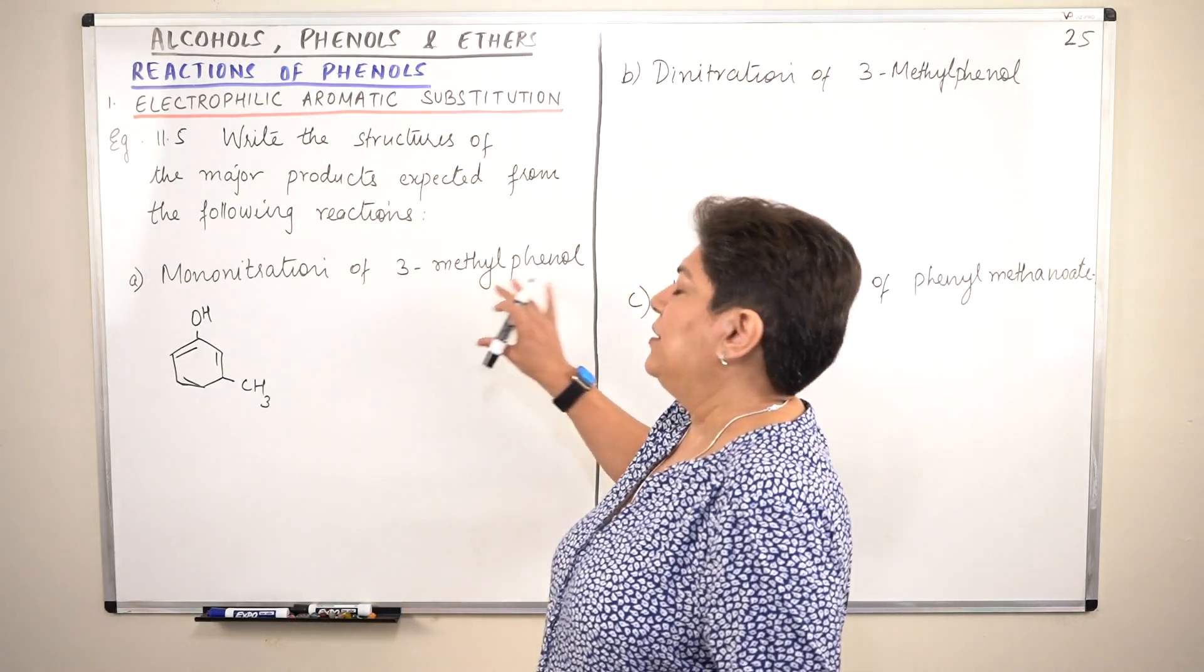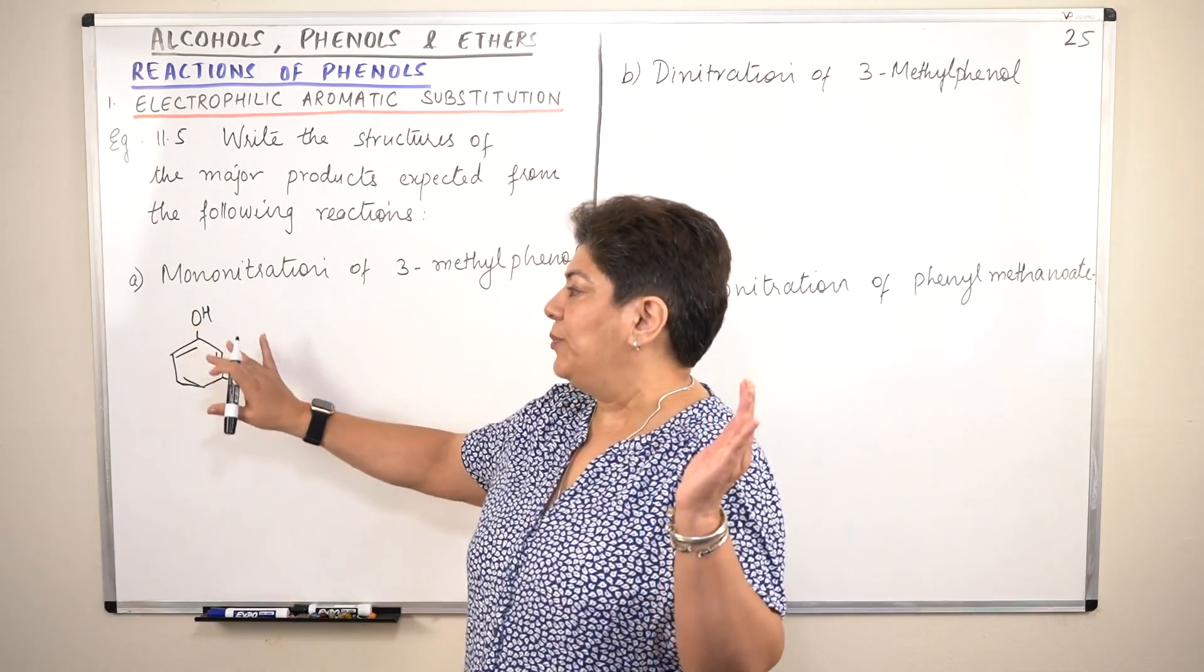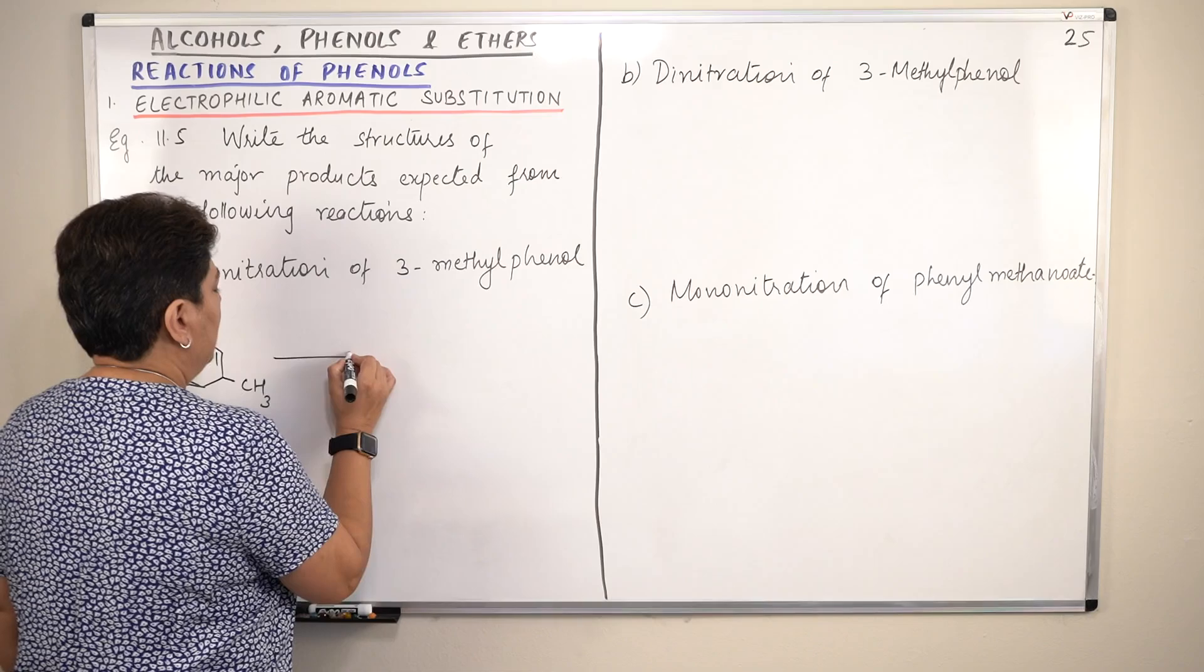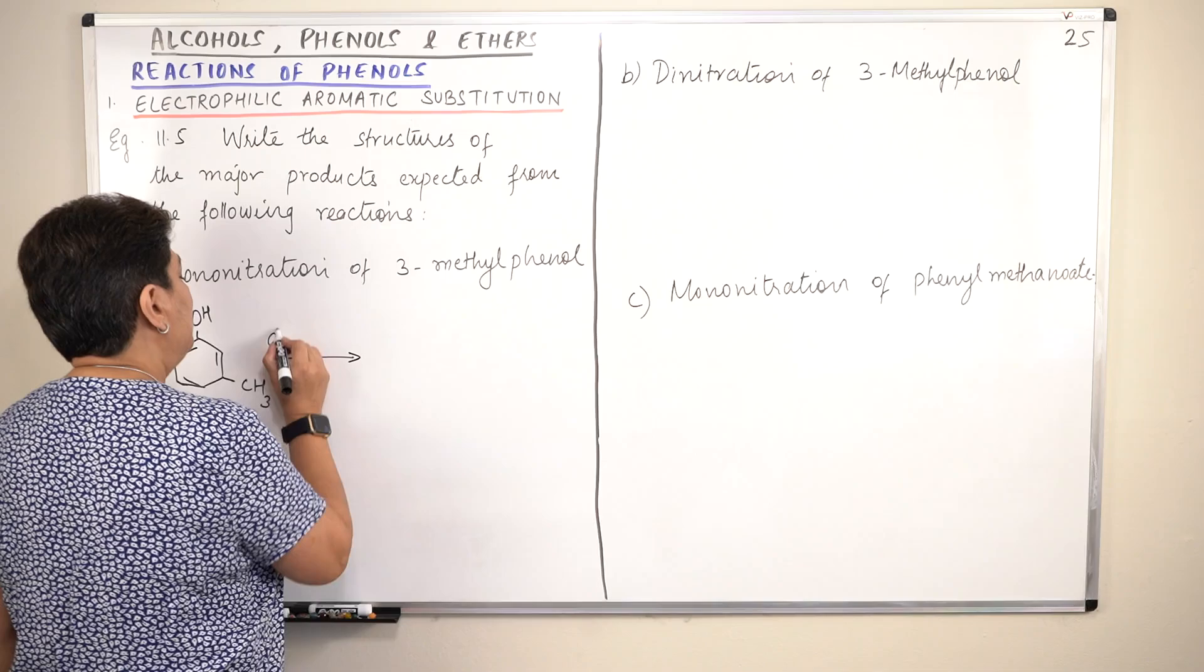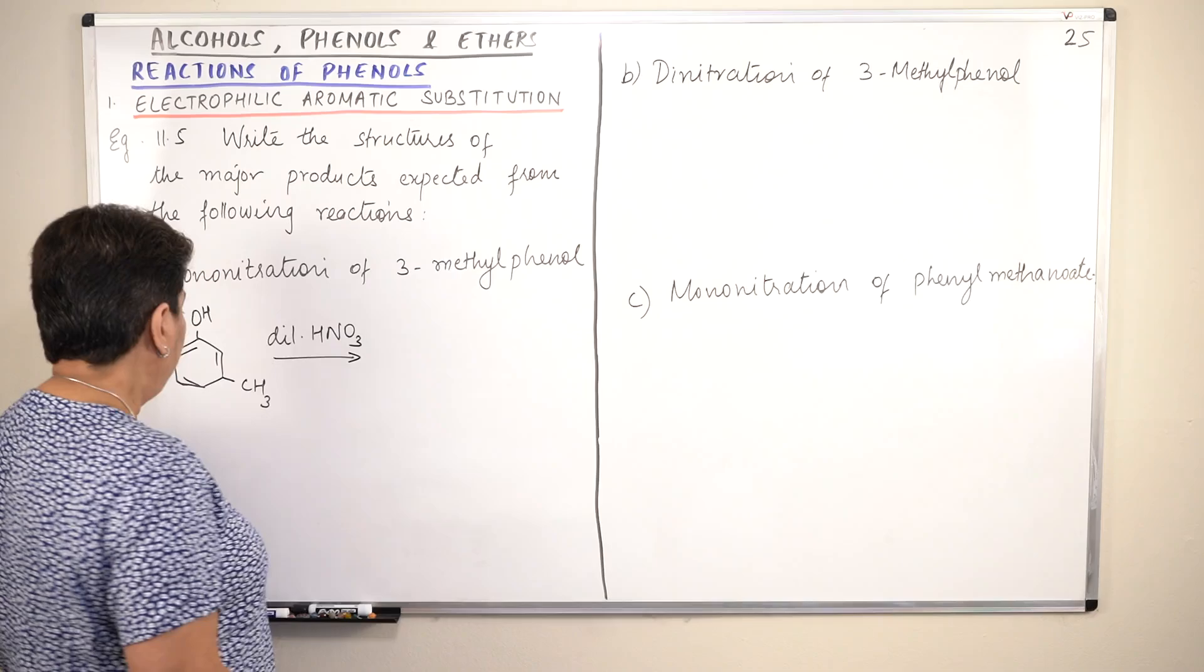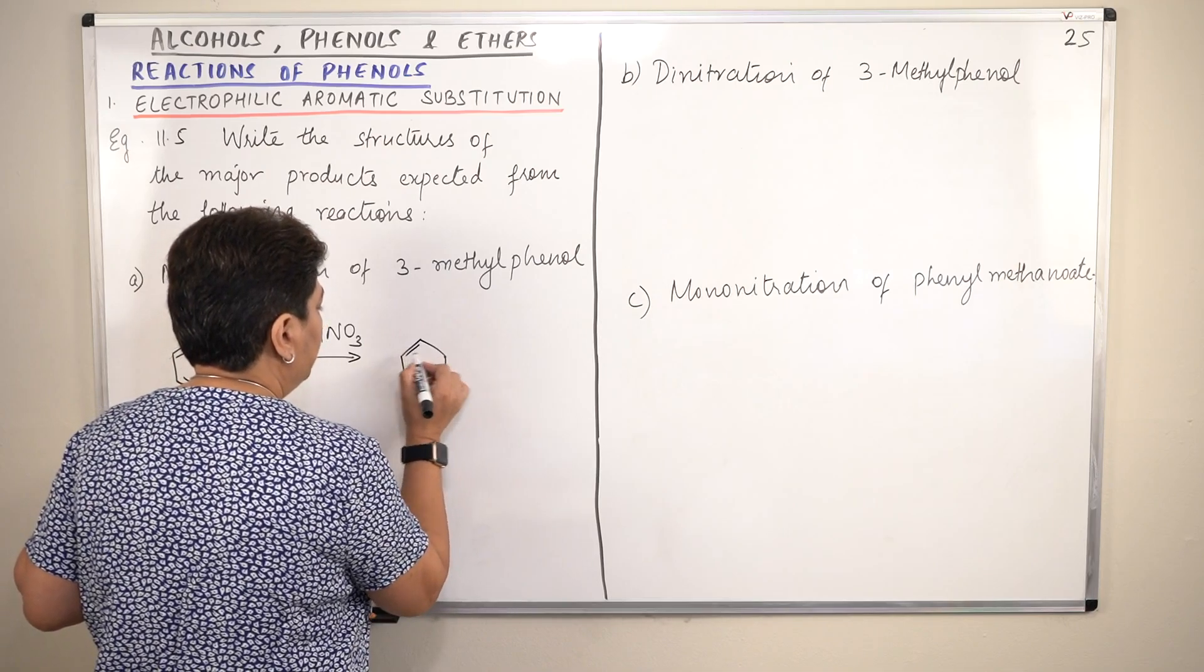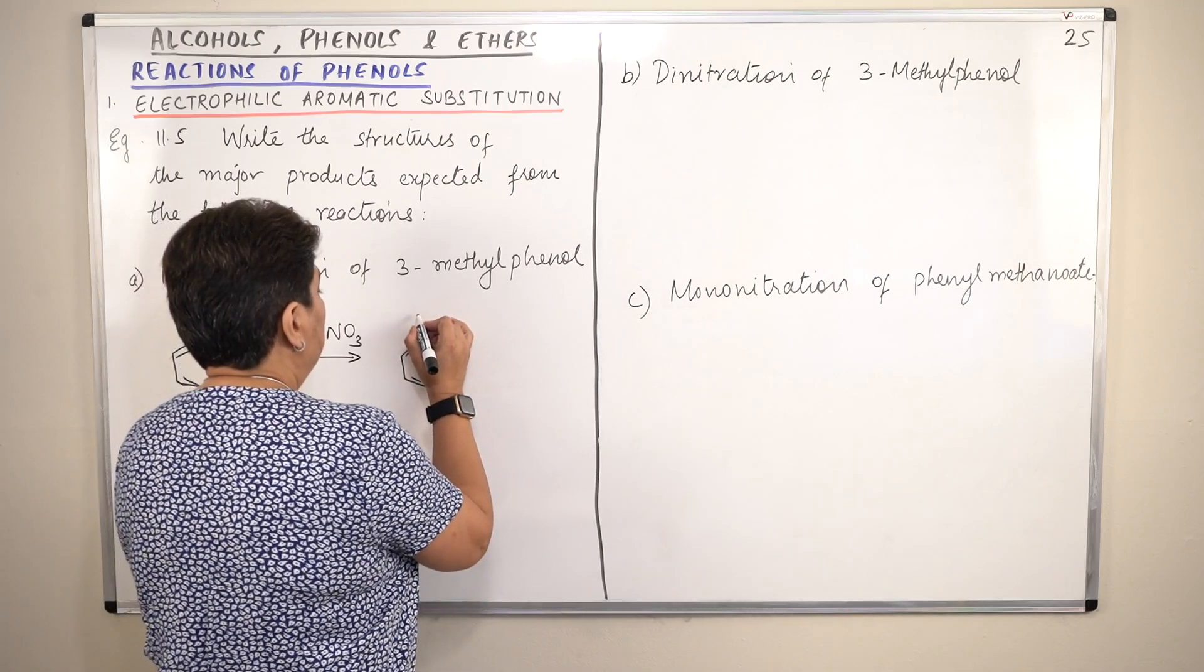So mononitration of 3-methylphenol. So this is 3-methylphenol. Where do you think nitration will occur? The OH group will cause the nitration to occur either at the ortho positions or the para positions. So let us draw the three products that will be formed. Since it is mononitration, the conditions of the reaction should be mild. So you use dilute HNO3, dilute nitric acid. Okay, and now this is phenol.